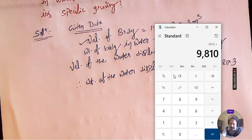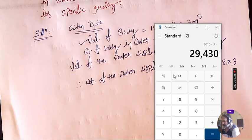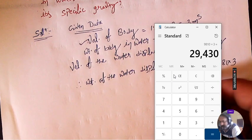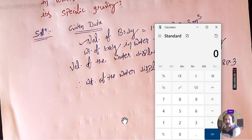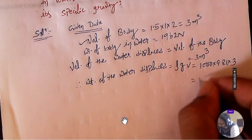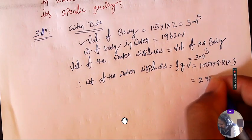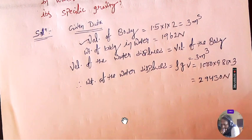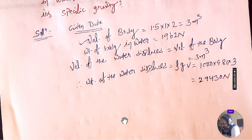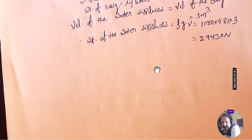So ρ is 1000, g is 9.81, and volume is 3 meter cube. Calculating: 1000 × 9.81 × 3 = 29,430 Newton. So this is the weight of the water displaced.